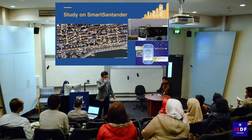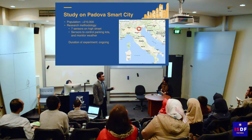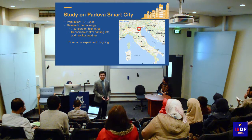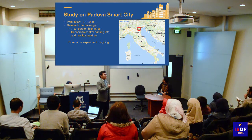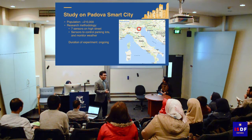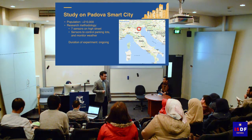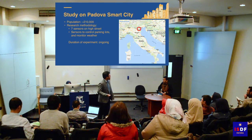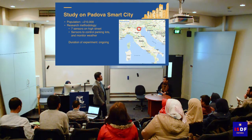This experiment has been replicated on a smaller scale in Padova, just outside the city of Venice. Because this research is ongoing, they have so far planted only seven sensors on their local high street — comparable to planting sensors on Swanston Street here. With only seven sensors, they currently monitor parking lots and weather.